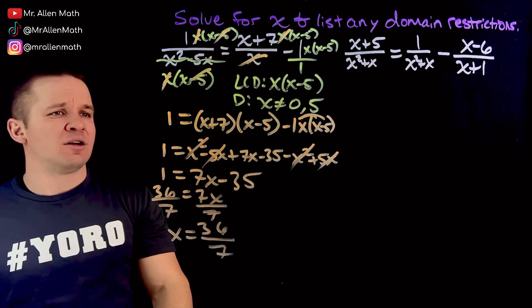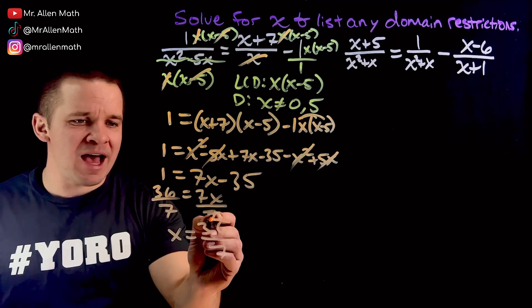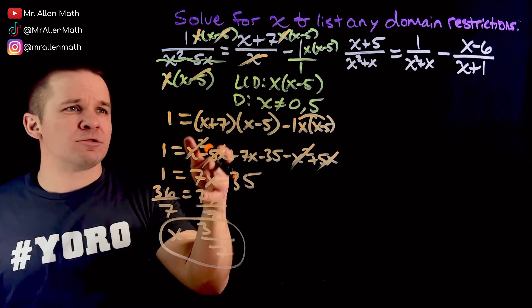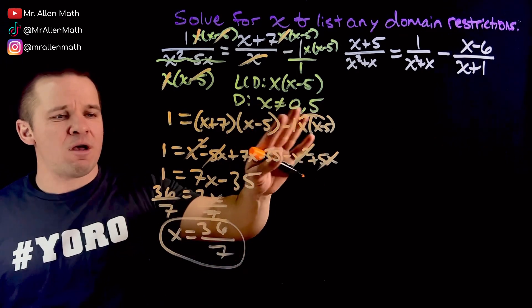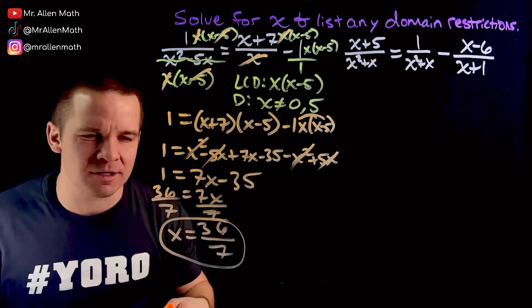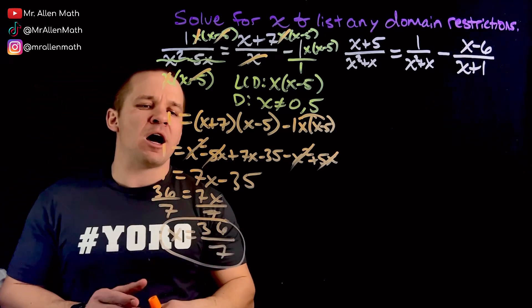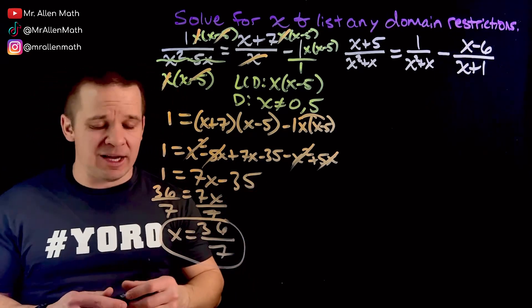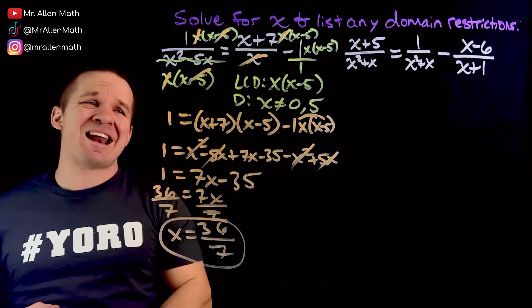Beautiful. Fantastic. Wonderful. And that is not part of my domain restrictions, right? Which is 0 and 5. Those are the ones that I got to avoid. If I got that, it's called an extraneous solution. See that another time. For now, x equals 36 over 7 is dope. Awesome. And we're on to the next one, dogs.